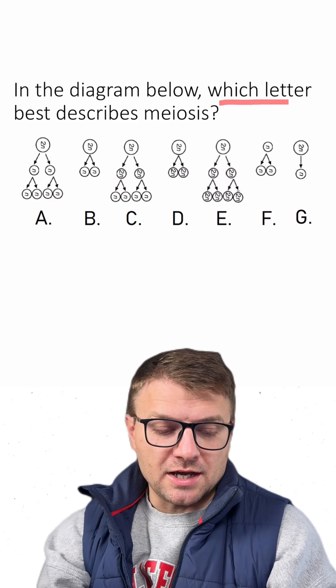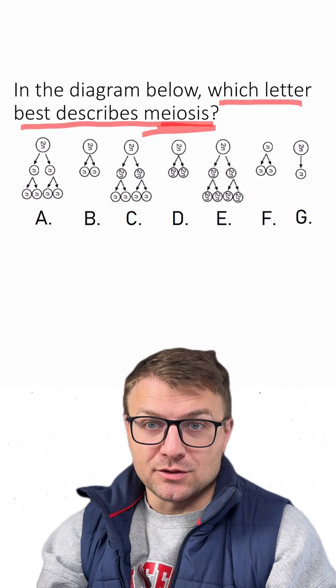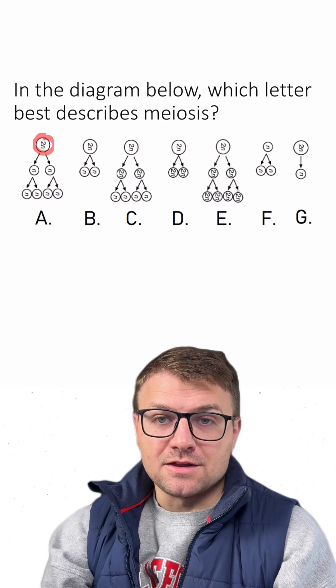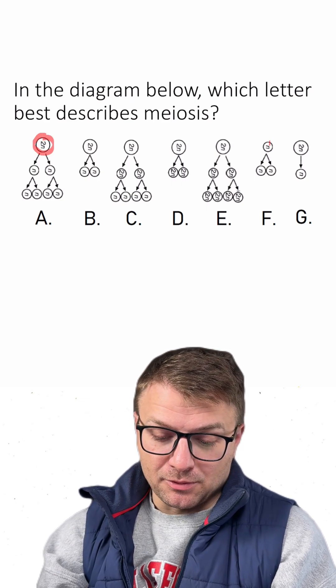In the diagram below, which letter best describes meiosis? So we can see in each diagram we're starting out with a cell that either is diploid or is haploid.